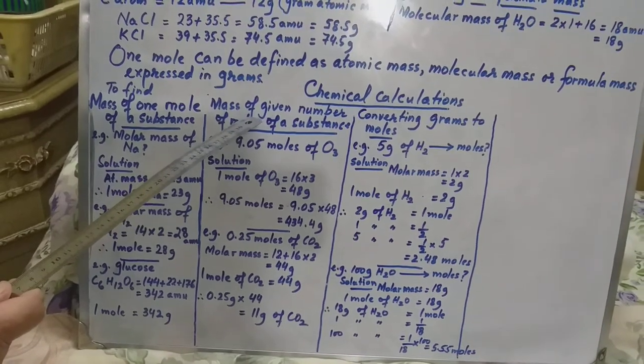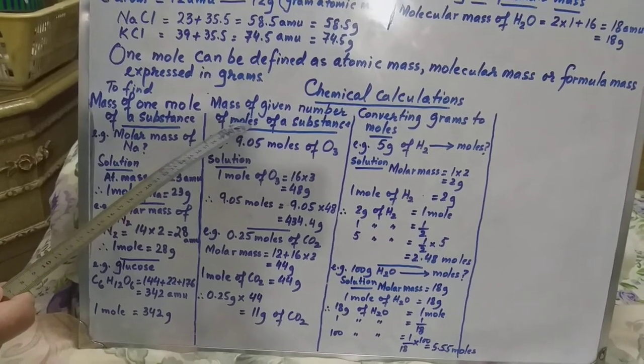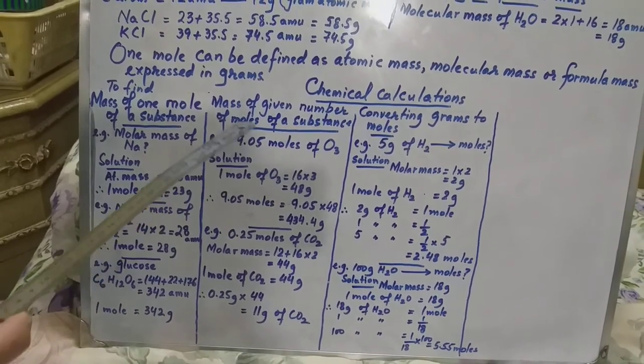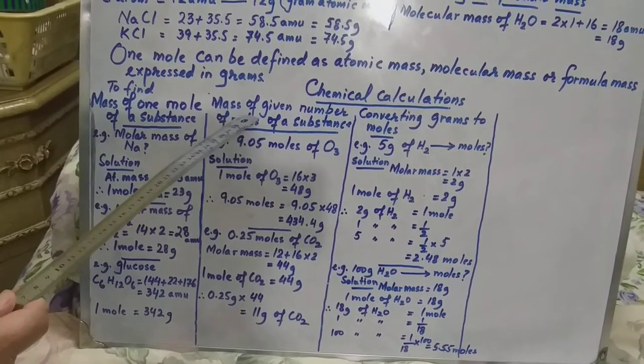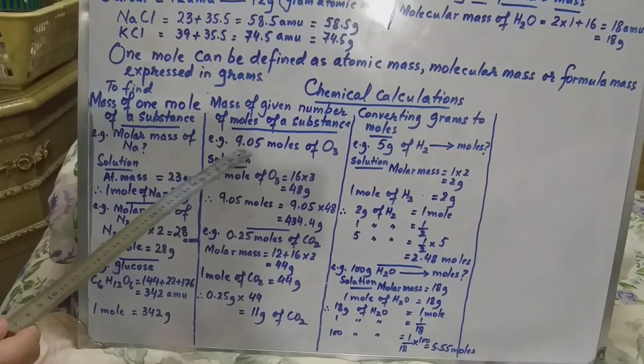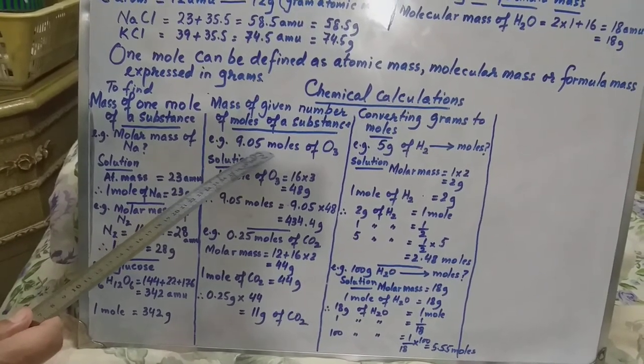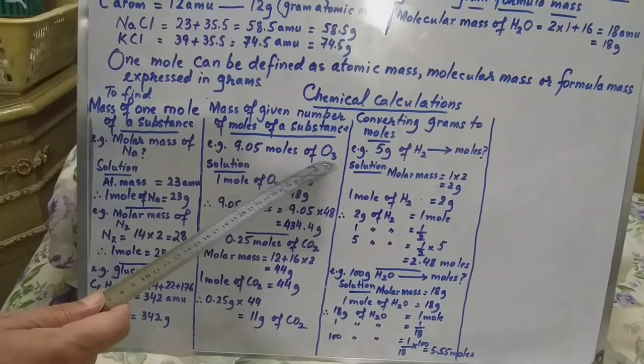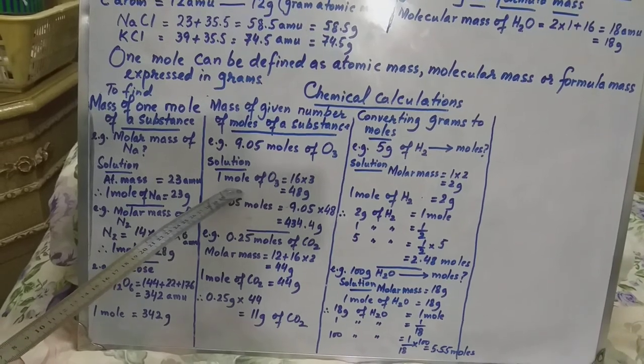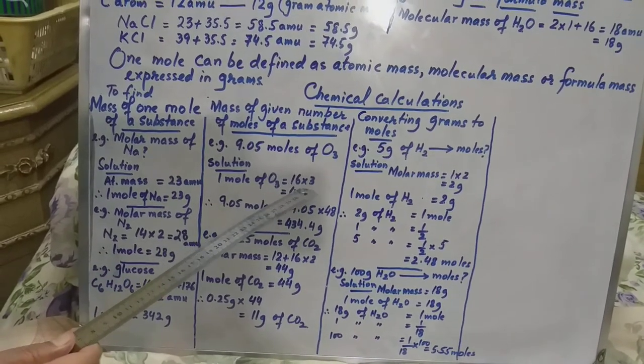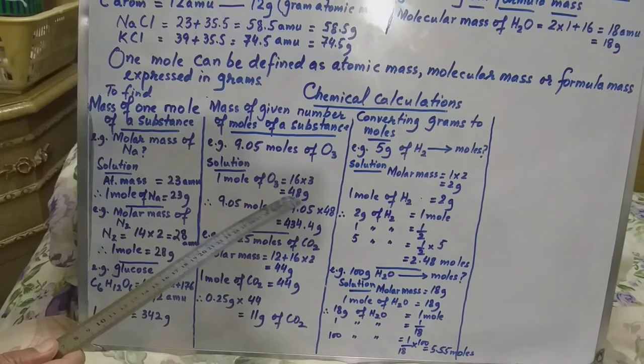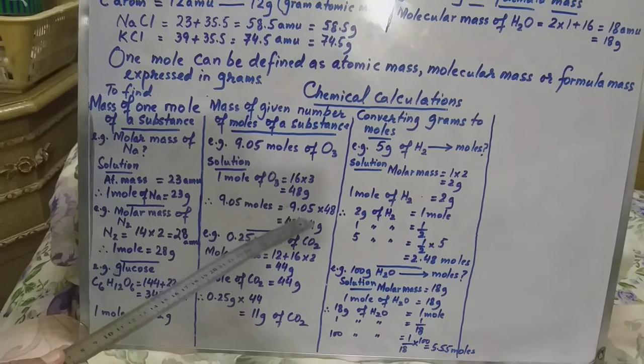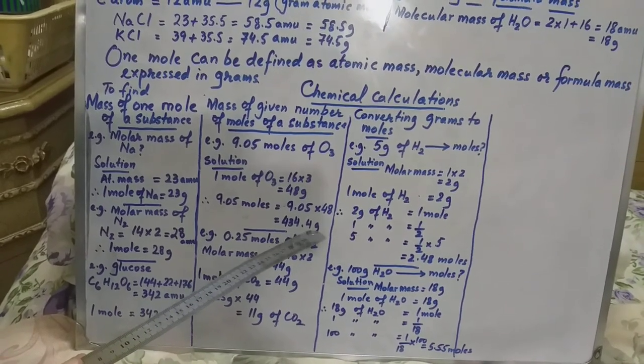Now number of moles. This is number of moles from the mass of substance. For example, 9.05 moles of O3. O2 is oxygen and O3 is ozone. So this one mole of O3 is 3 times 16. So this one mole is 48 grams. So 9.05 moles of ozone will be 9.05 multiplied by 48, that is 434.4 grams.